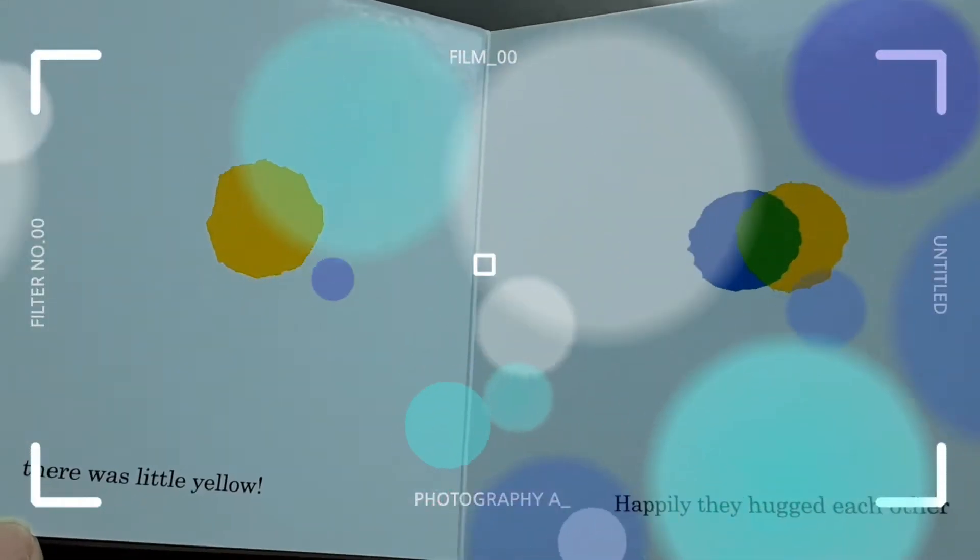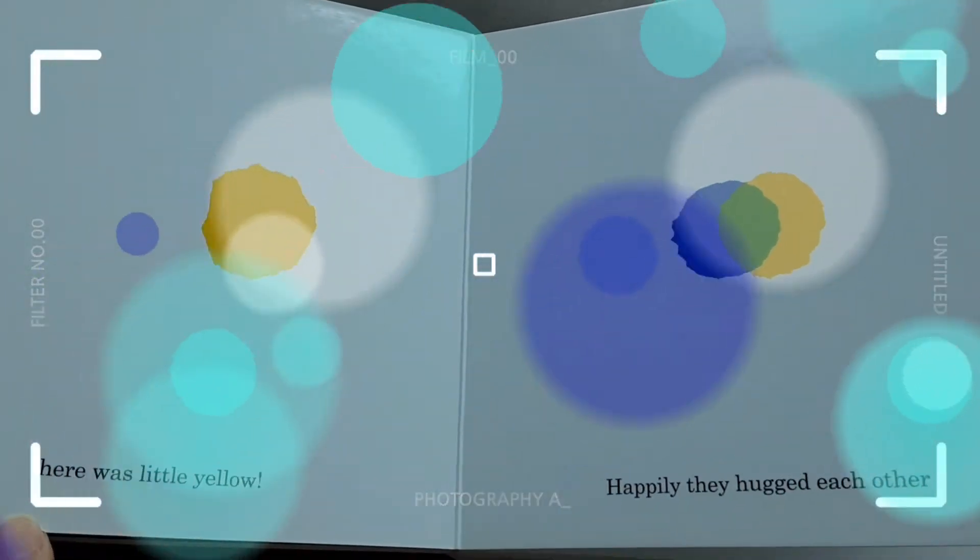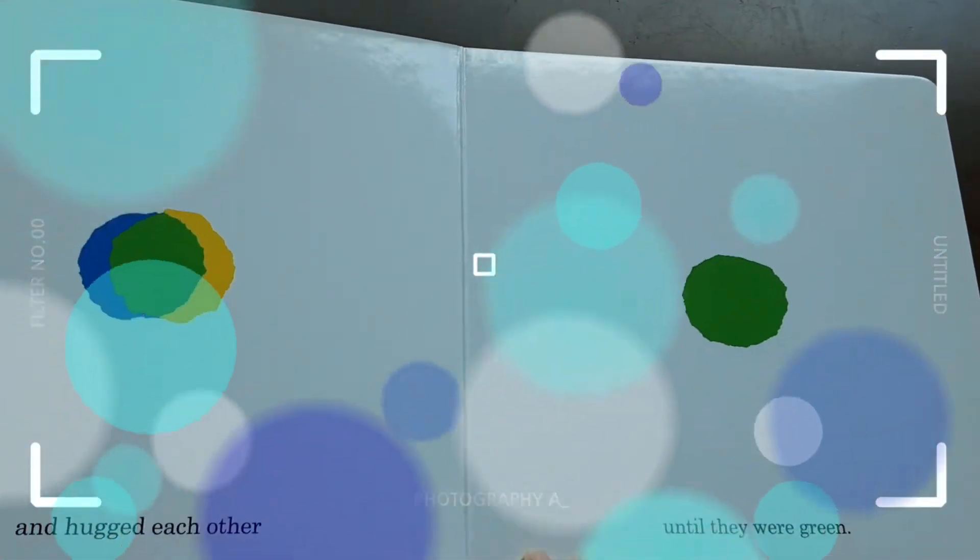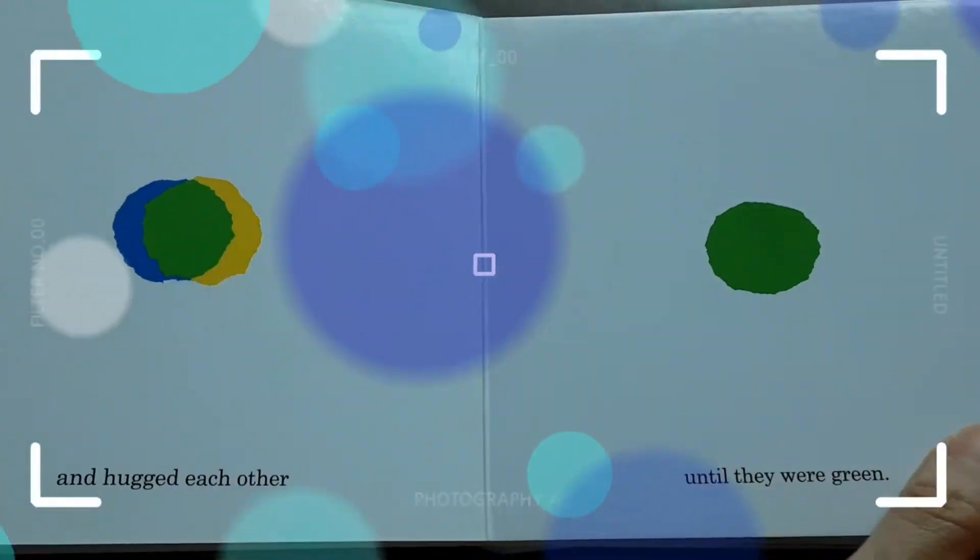He looked here and there and everywhere, until suddenly, around the corner, there was Little Yellow. They hugged each other and hugged each other until they were green.